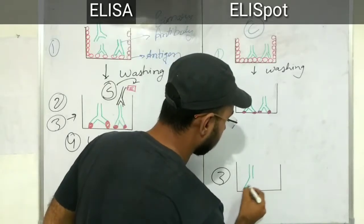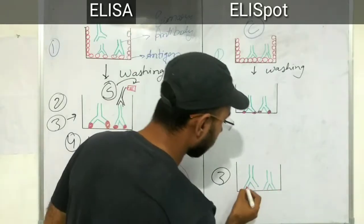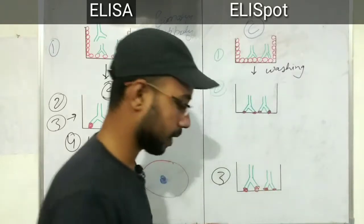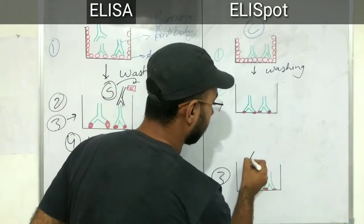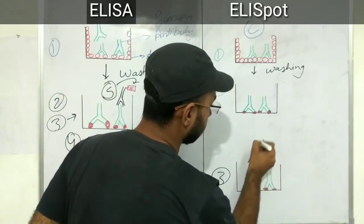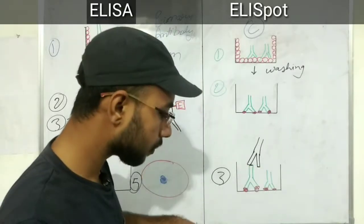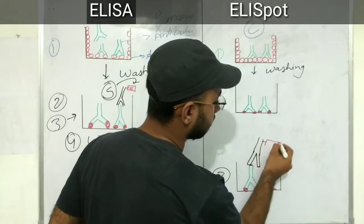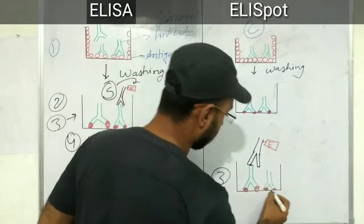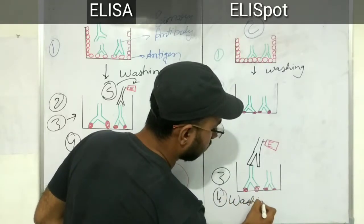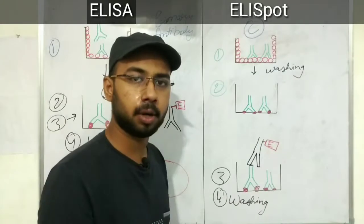The primary antibody is here with antigen bound to it. The enzyme linked secondary antibody, as shown before, is used here and will bind to the primary antibody. It contains an enzyme linked to it. After adding this, we again wash it in the fourth step, so that the enzyme linked antibody which has not attached to the primary antigen-antibody complex is washed away.